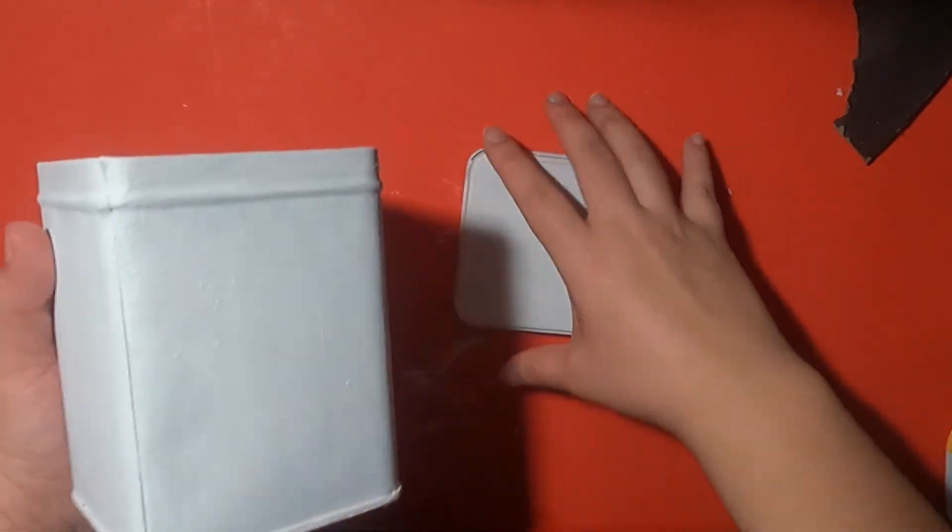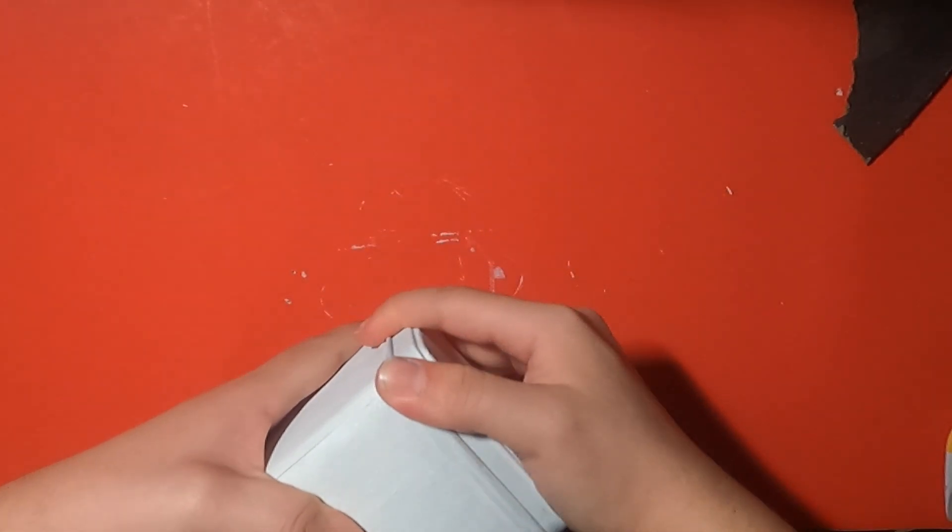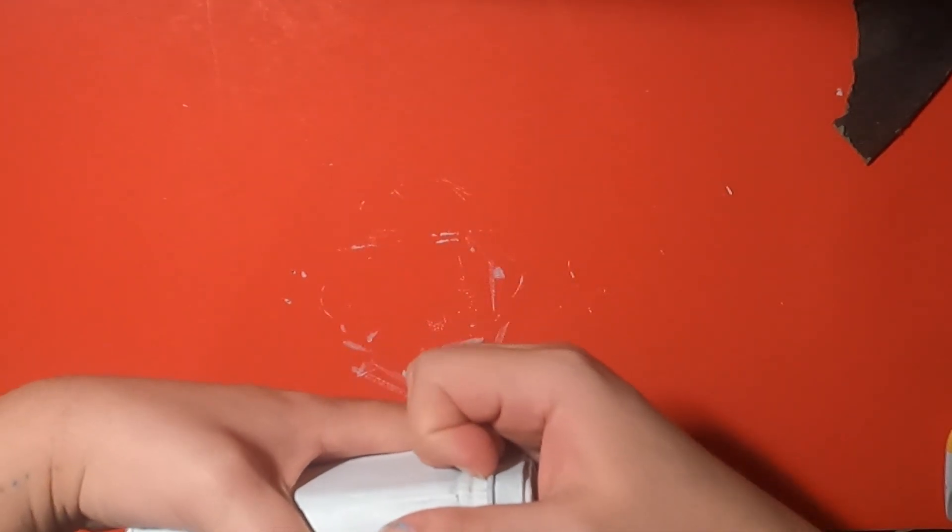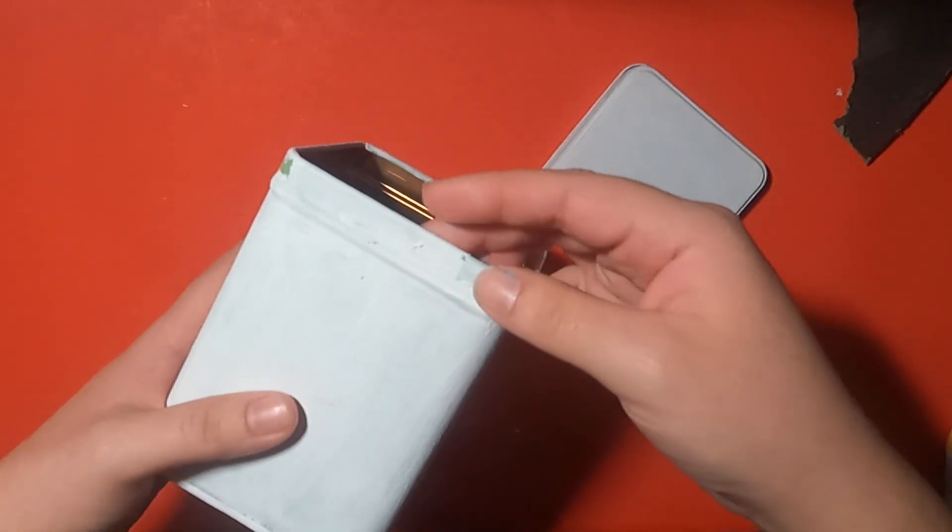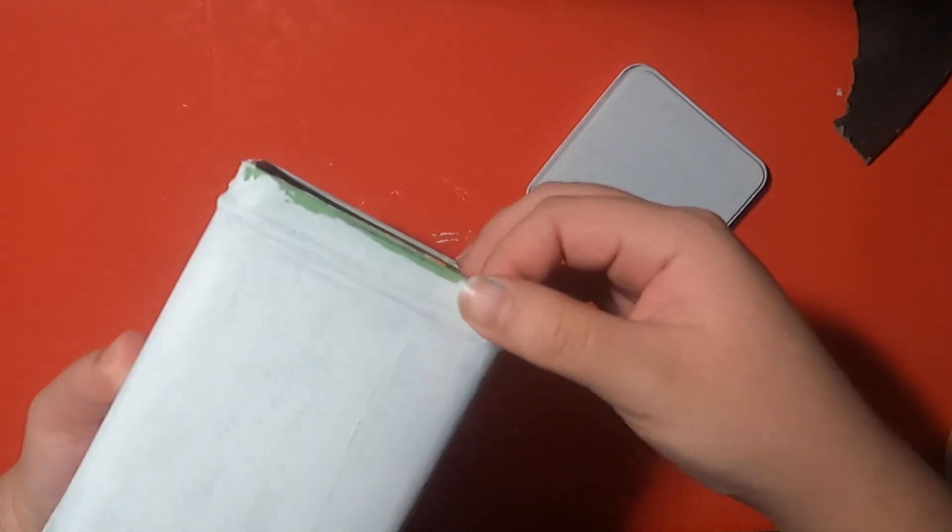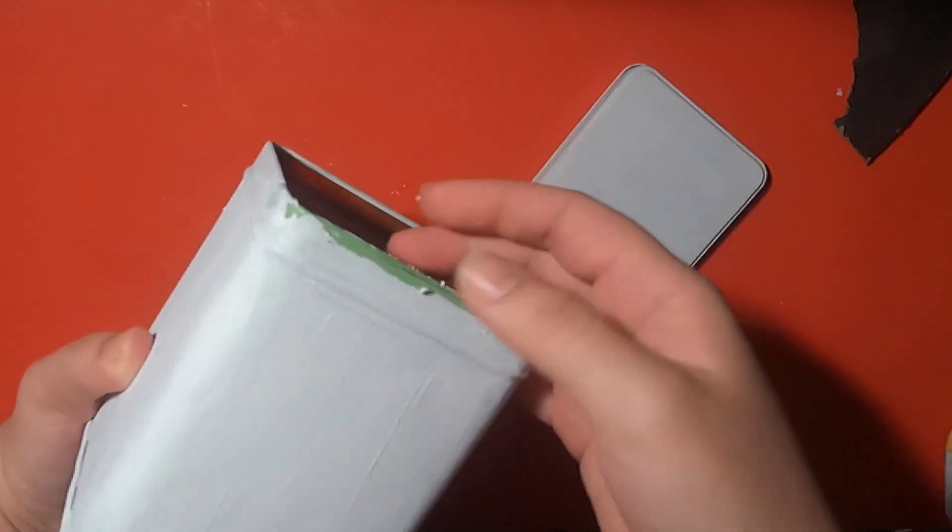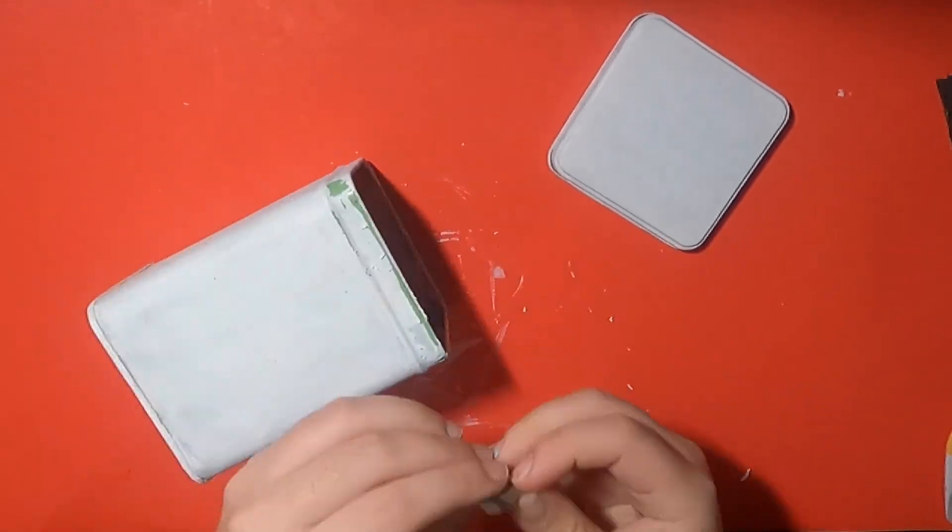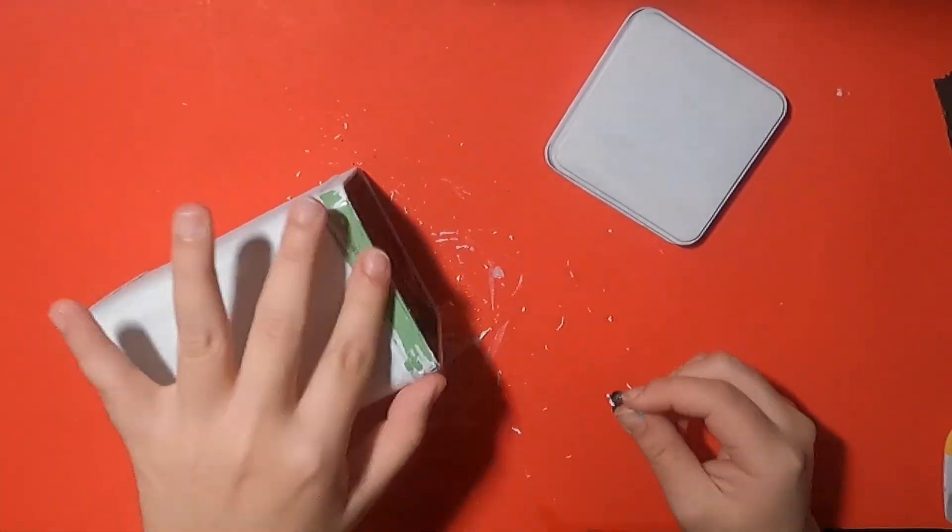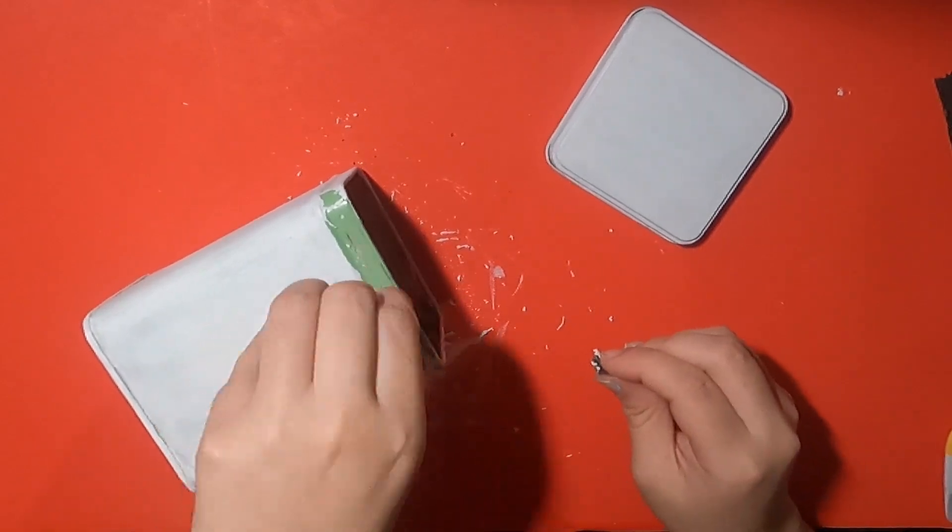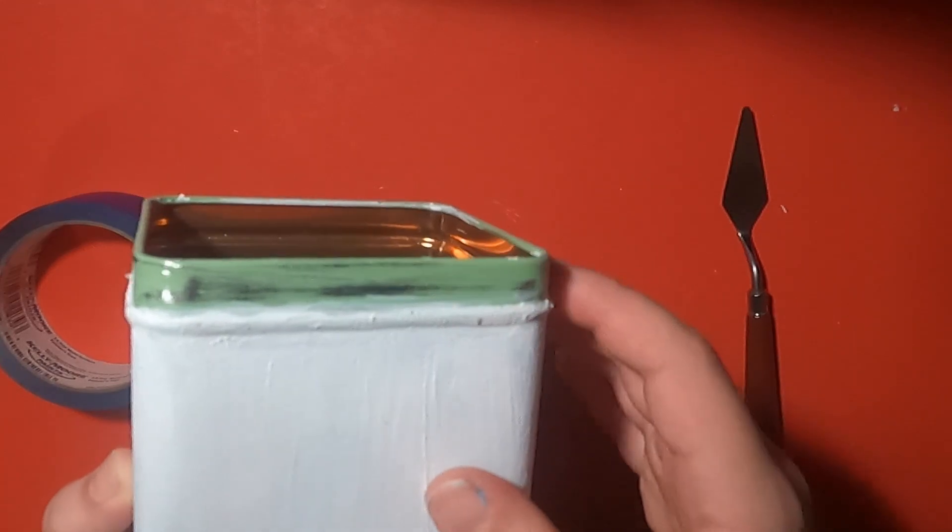I painted the whole thing white but then I realized I'm not going to be able to put the cap on because of all the layers of gesso, at least not easily. So I'm just going to sand this off and then maybe just paint it with one layer of black just so it's not the ugly green color.